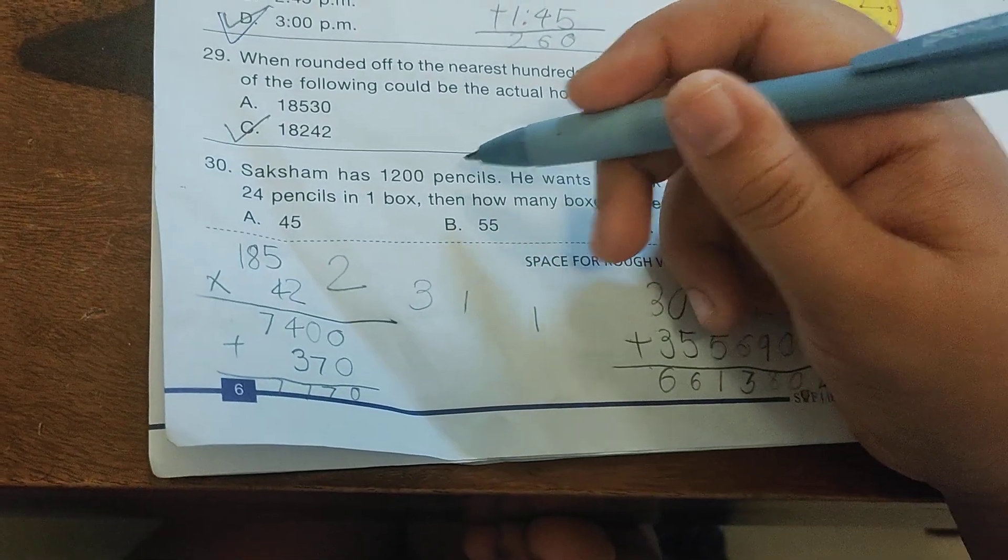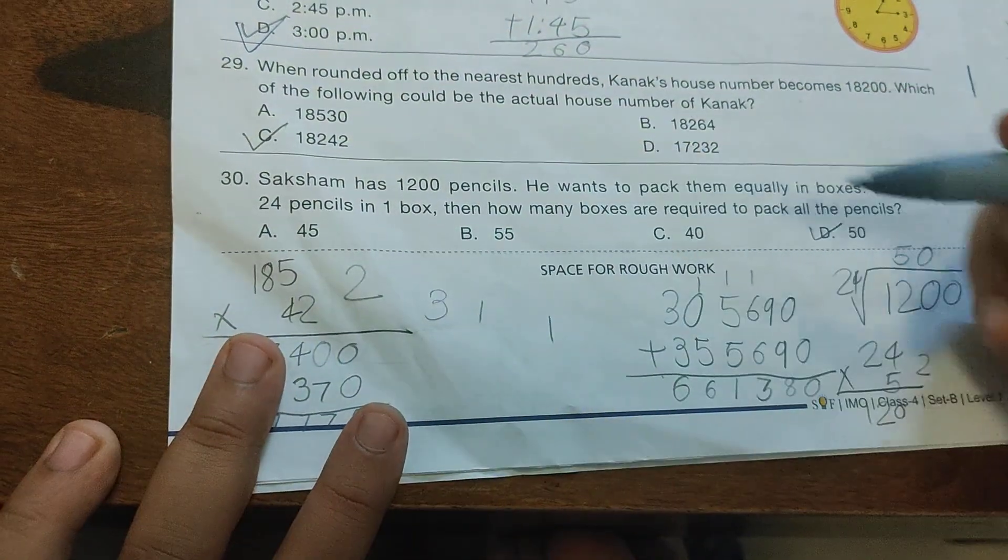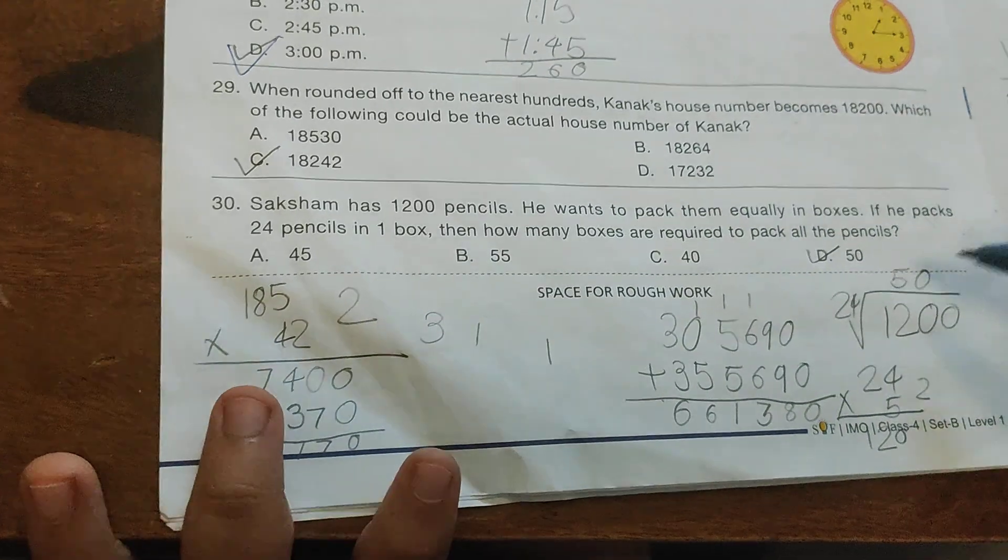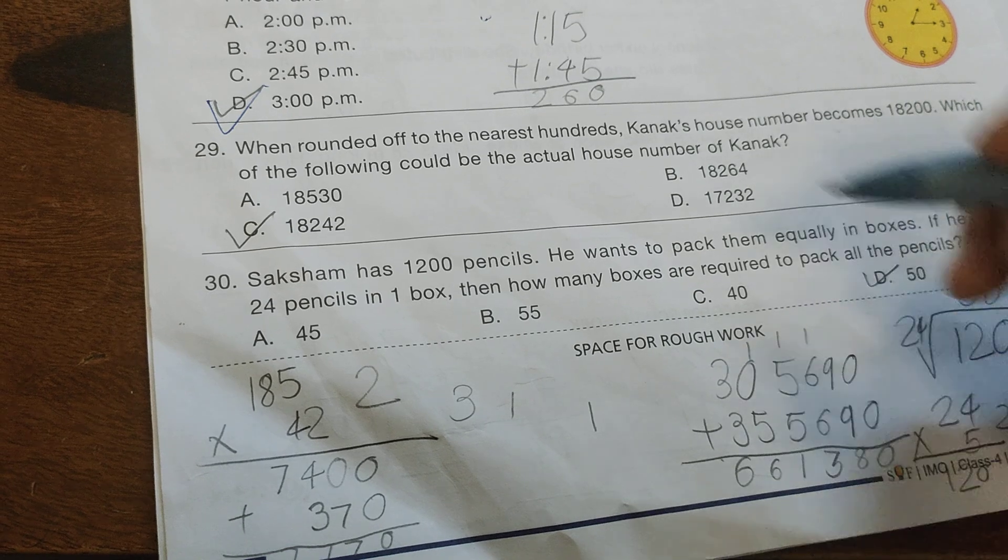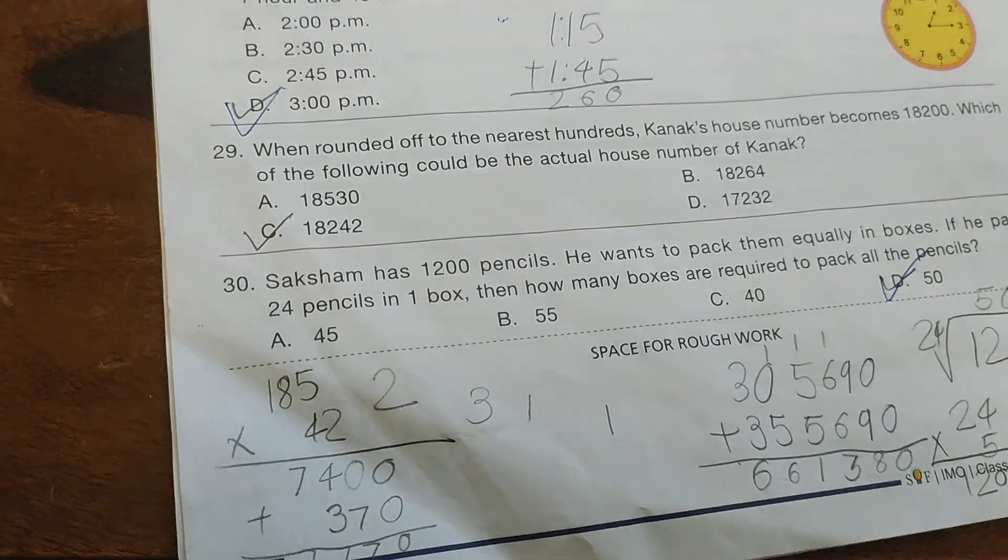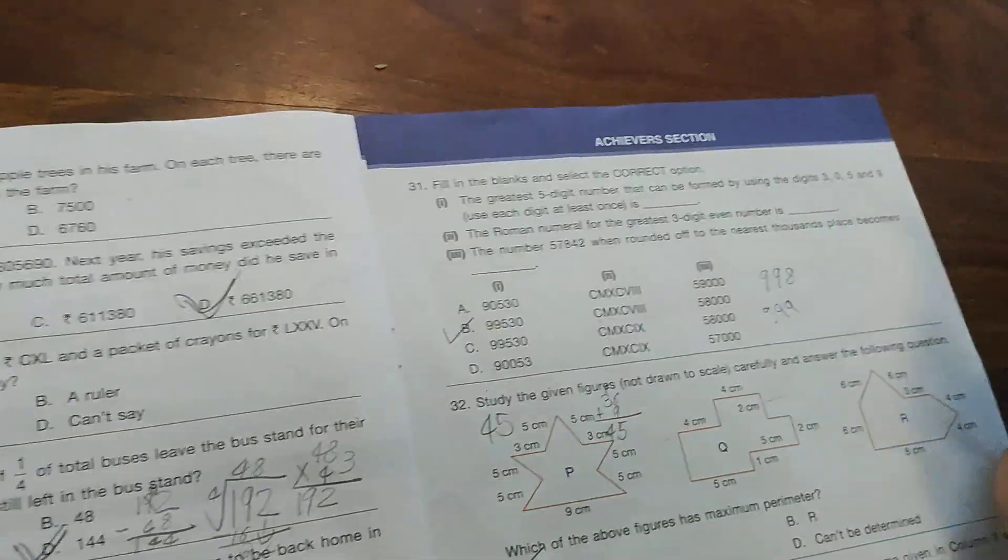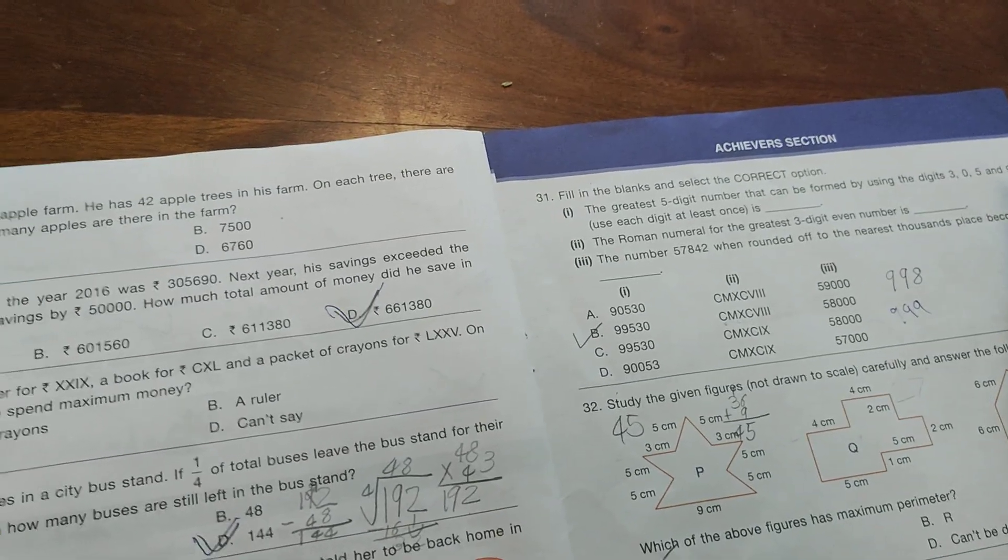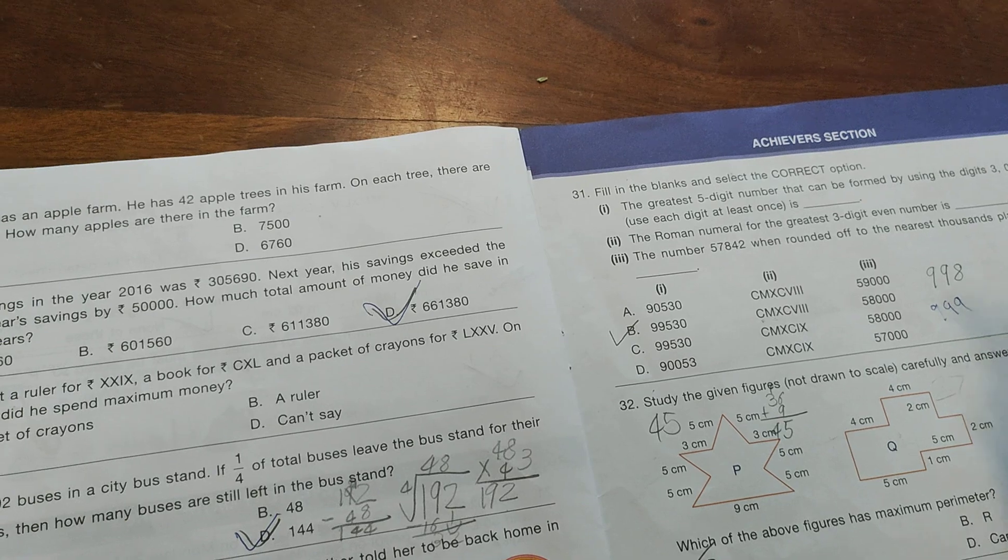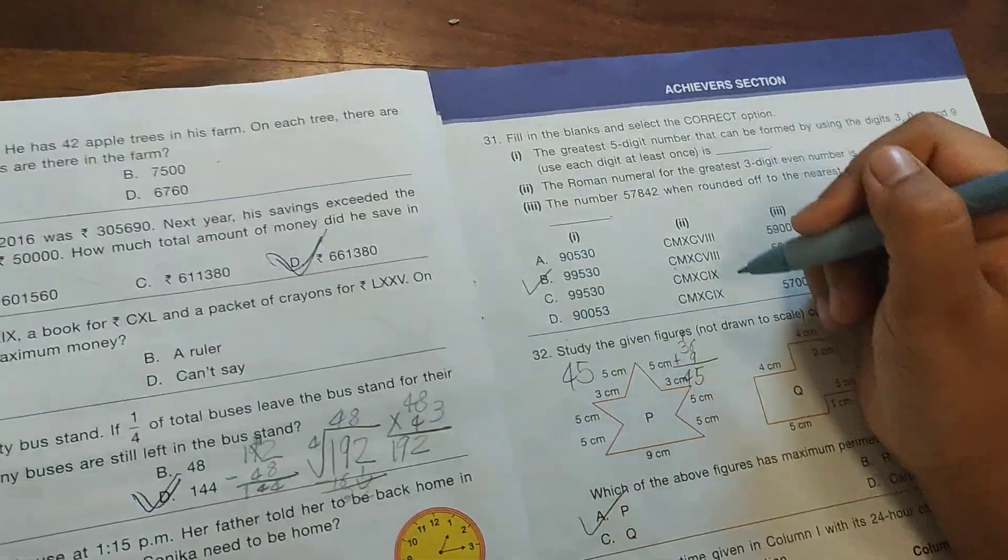Saksham has 1,200 pencils. He wants to pack them equally in boxes. If he packs 24 pencils in one box, how many boxes are required? 1,200 divided by 24 equals 50, so 50 boxes are required. Now let's move to the Achiever Section. Fill in the blanks and select the correct option. The greatest 5-digit number using given digits - after analysis, options A and D are eliminated.